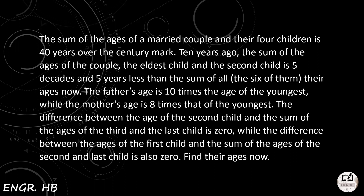The father's age is ten times the age of the youngest, while the mother's age is eight times that of the youngest. The difference between the age of the second child and the sum of the ages of the third and last child is zero, while the difference between the ages of the first child and the sum of the ages of the second and the last child is also zero. Find their ages now.